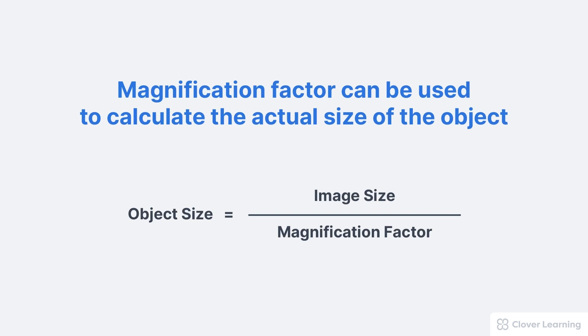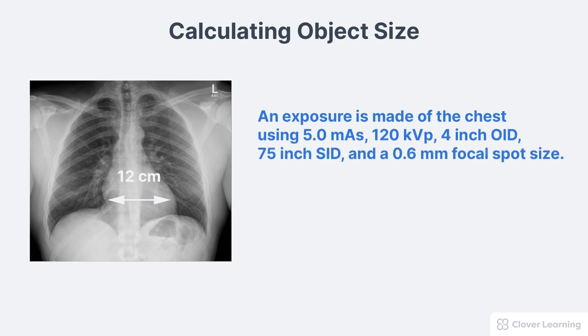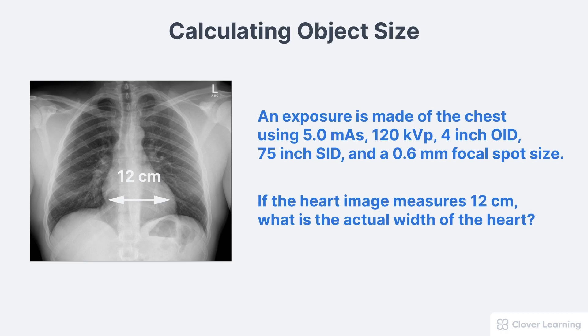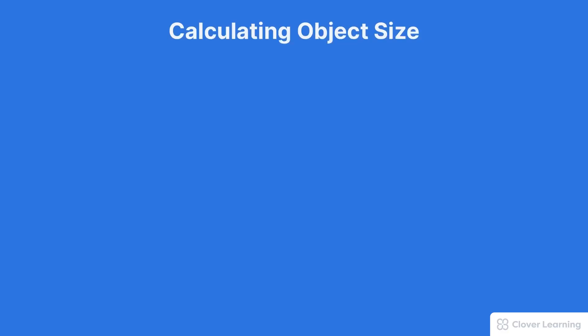Here's a scenario that uses this formula. An exposure is made of the chest using 5 milliamps, 120 kVp, a 4-inch OID, a 75-inch SID, and a 0.6-millimeter focal spot size. If the image of the heart measures 12 centimeters, what is the actual width of the heart? There's a lot of extra information in here that we don't need.